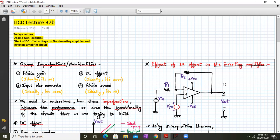Hello everyone, welcome to LICD lecture 37b. Today we are going to discuss op-amp non-idealities and the next topic will be the effect of DC offset voltage on non-inverting and inverting amplifier circuits.